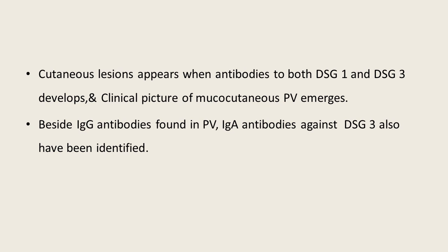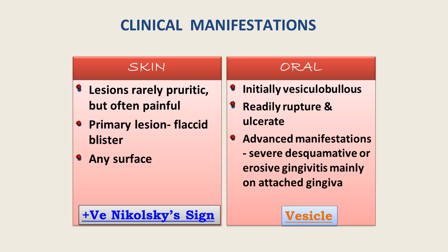In clinical manifestations: with the skin, lesions are rarely pruritic but often painful; primary lesions are flaccid blisters that can occur on any surface, and there is a positive Nikolsky sign on the skin. In the oral cavity, there is an initial vesiculobullous lesion which readily ruptures and ulcerates; in advanced disease it manifests as severe desquamative and erosive gingivitis mainly on attached gingiva, with mostly vesicle formation.